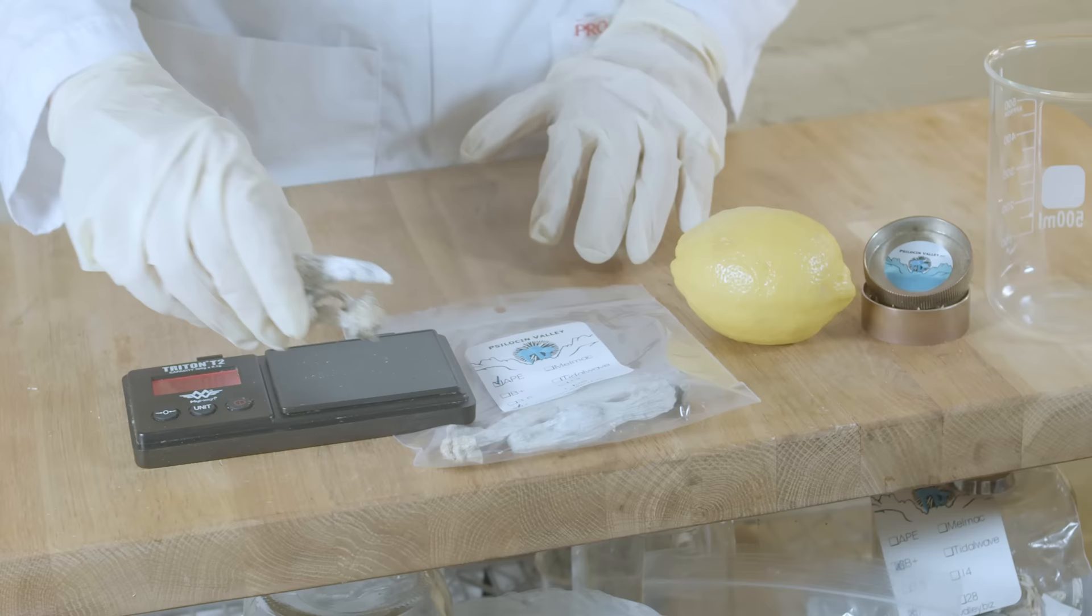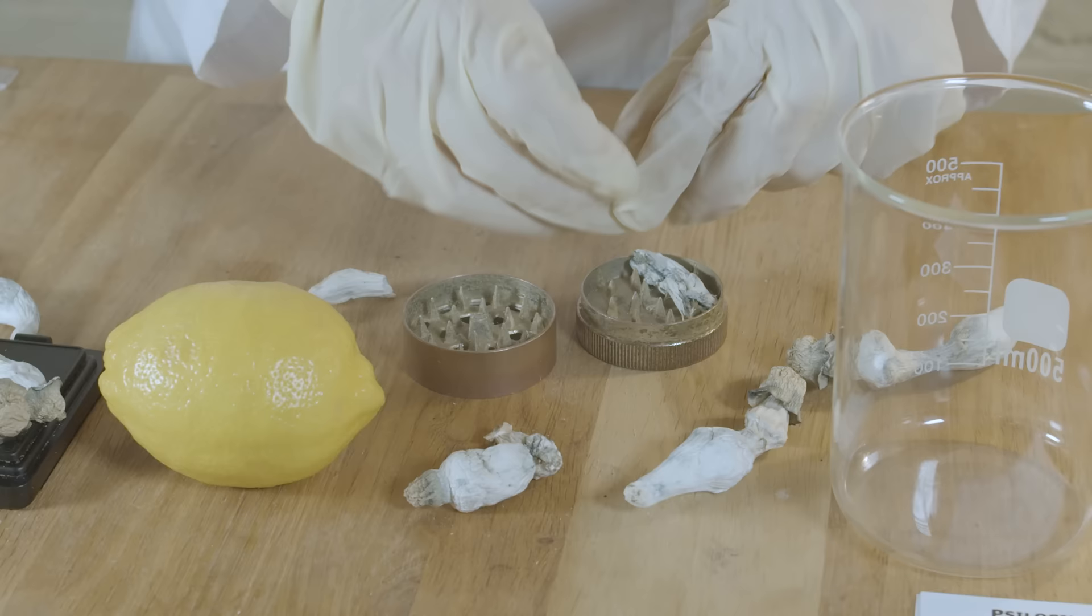We're going to be using some albino penis envies, otherwise known as APEs, from Psilocybin Valley. You'll also need a lemon, a grinder, and a mug.